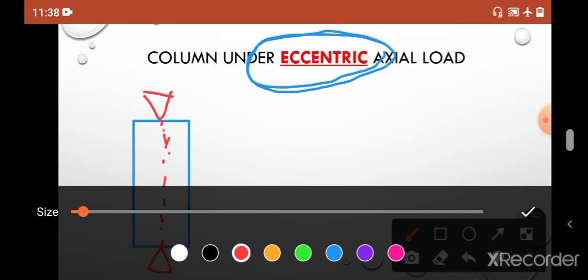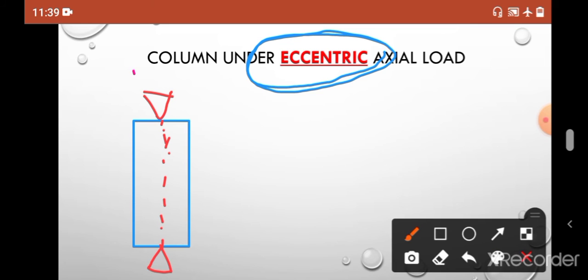So let's see what happens if we apply eccentric axial load to our column. Let's say this is our column with support at both ends. As you can see, this is the center line. Now you are applying your load - let's say this is your applied load here - just at the edge or maybe somewhere here.